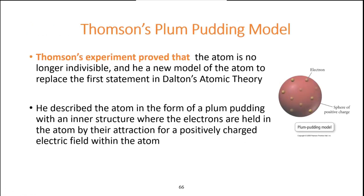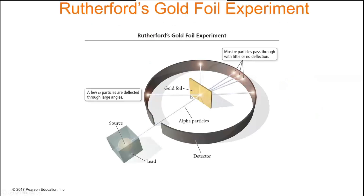Thomson's plum pudding model proposed that electrons are dispersed throughout a positive sphere — a 'plum pudding' of positivity containing protons and electrons spread throughout. However, Rutherford's gold foil experiment disproved this: he shot alpha particles (helium nuclei) through gold foil, and about 98% passed straight through with little deflection, indicating that most of the atom is empty space.